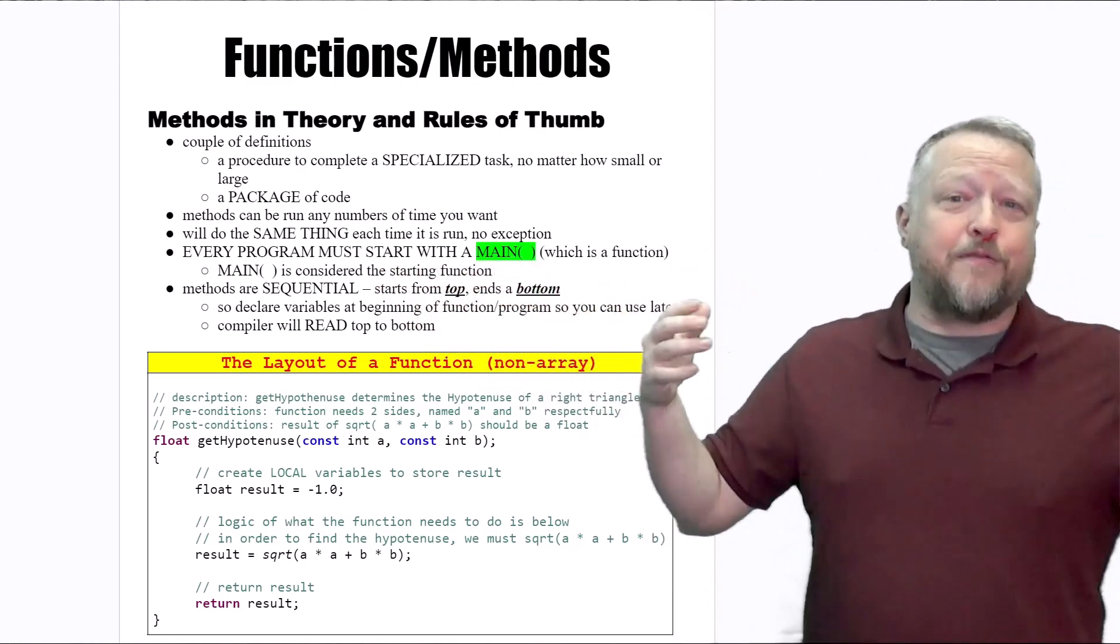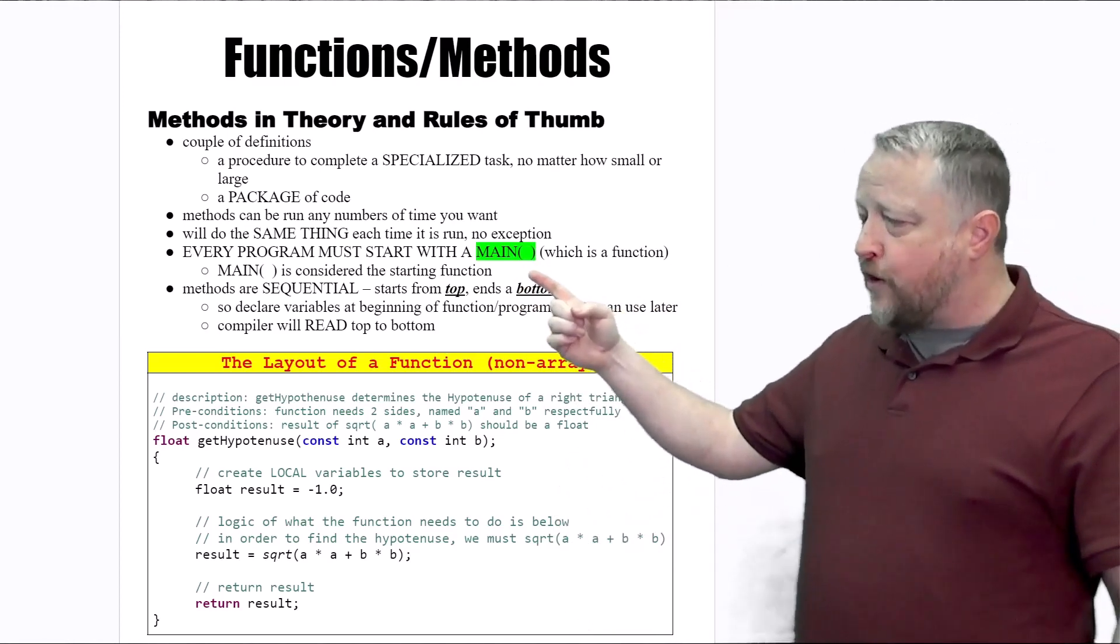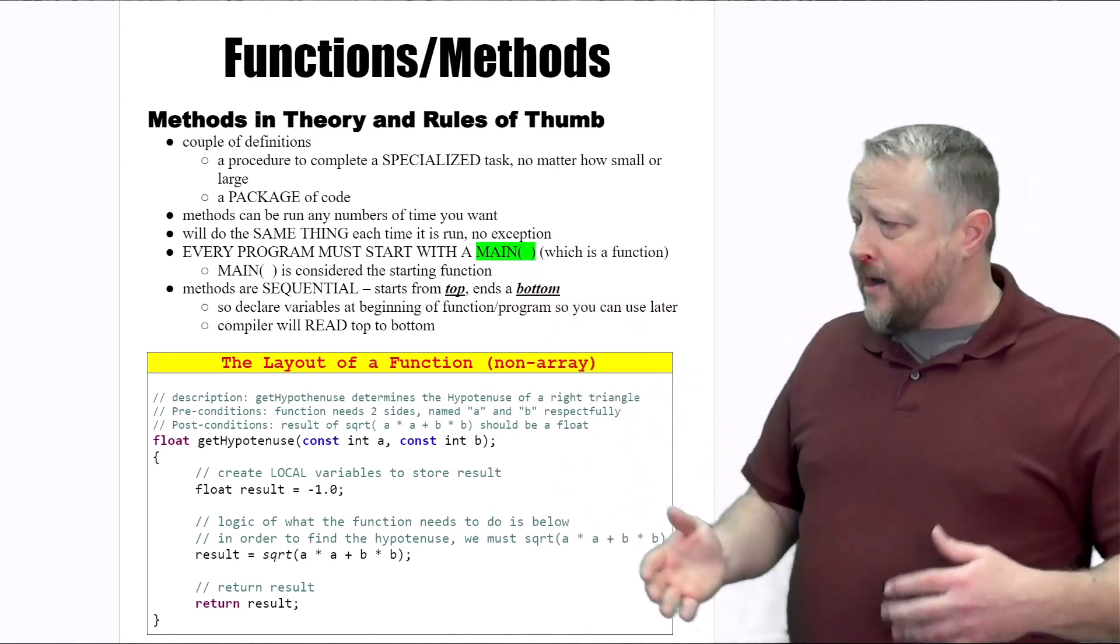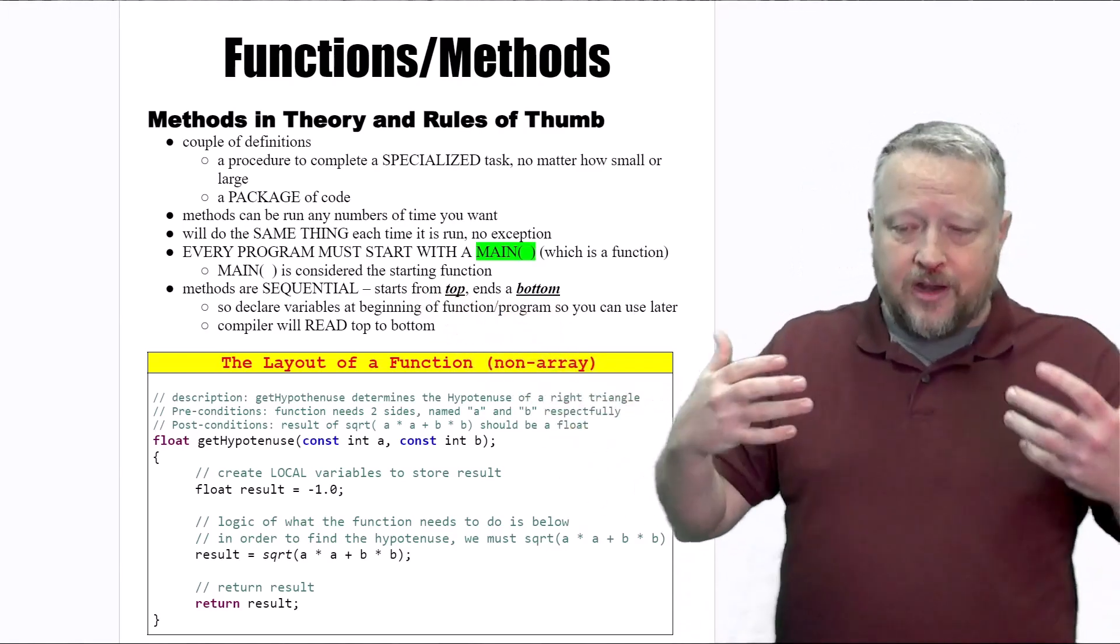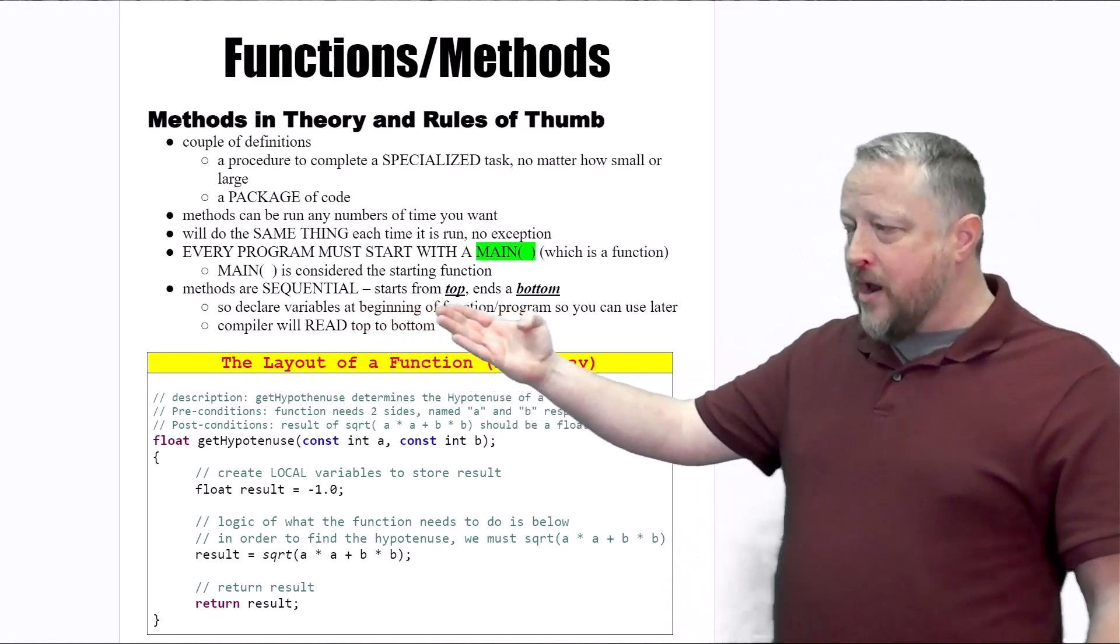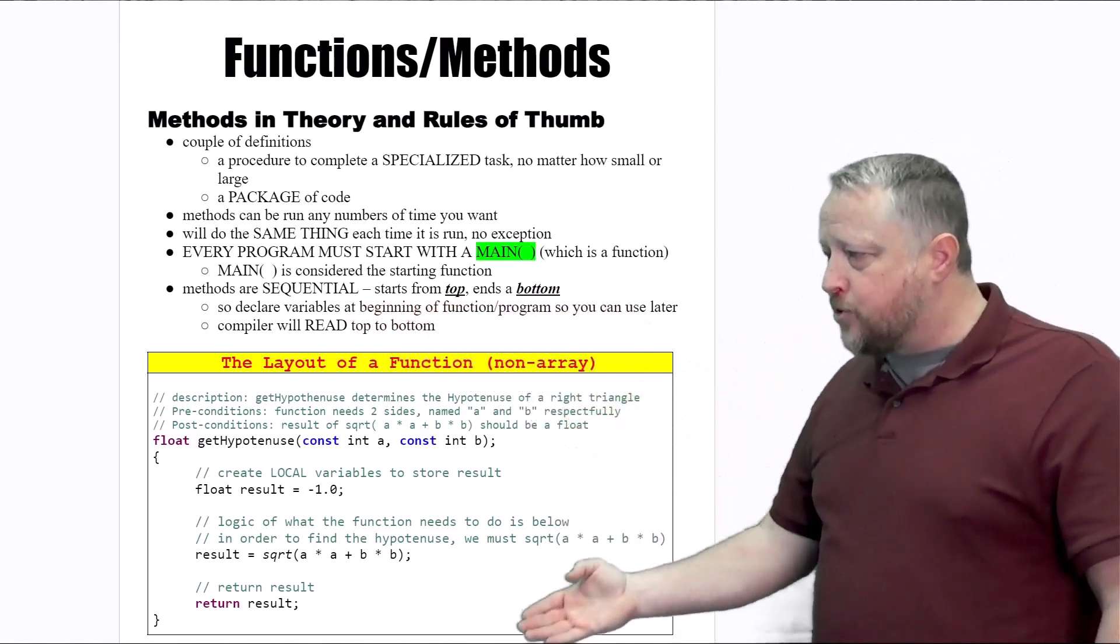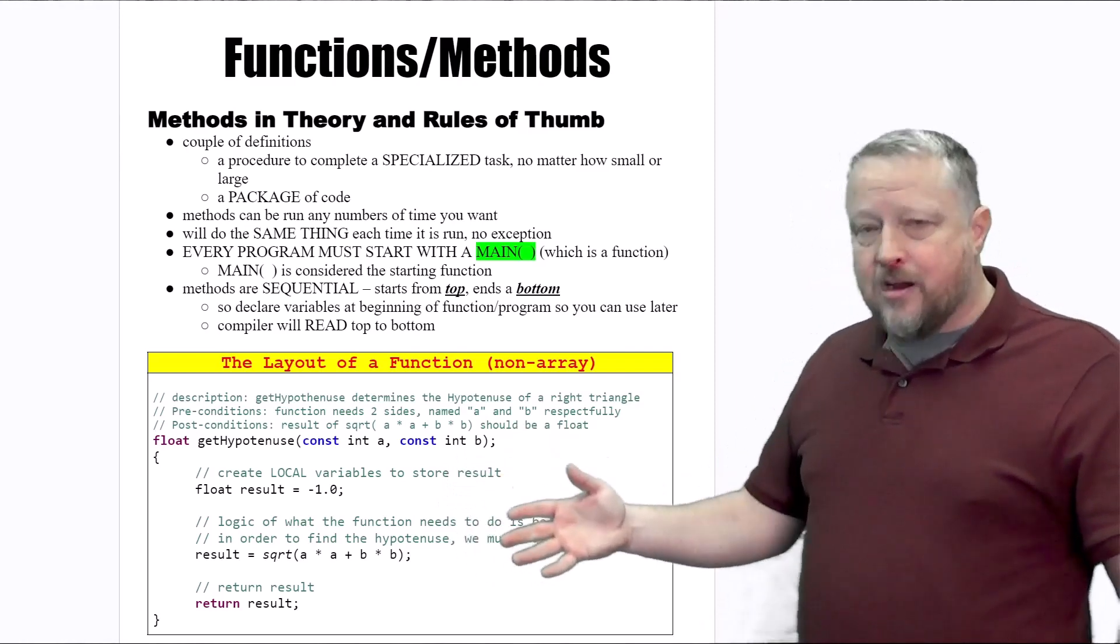You've actually seen functions before. You can tell it's a function because it has parentheses behind it. Main is considered the starting function to start everything out. Methods are sequential—we start from the top and we go towards the bottom. Any variables that we declare in here, we can use later, just like we do with the main.